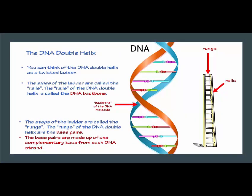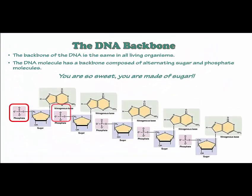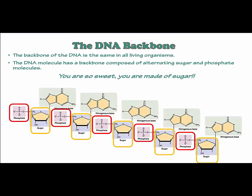You can think of the DNA double helix as a twisted ladder. The sides of the ladder are called the rails, and the rails of the DNA double helix are called the DNA backbone. The steps of the ladder are called the rungs, and the rungs of the DNA double helix are called the base pairs. The base pairs are made up of one complementary base from each DNA strand. The backbone of DNA is the same in all living organisms — it is composed of alternating sugar and phosphate molecules.